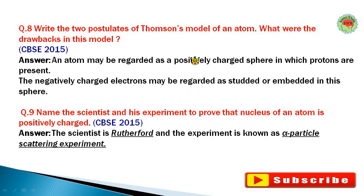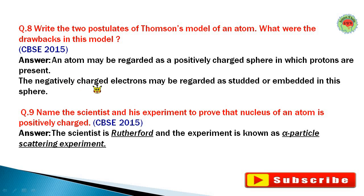Question number eight: Write two postulates of Thomson's model of an atom. First, an atom may be regarded as a positively charged sphere in which protons are present. Second, the negatively charged electrons are studded or embedded in this sphere.